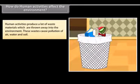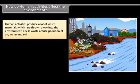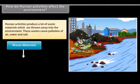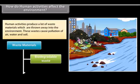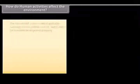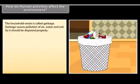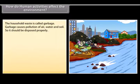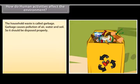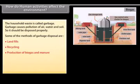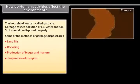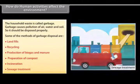How do human activities affect the environment? Human activities produce a lot of waste materials which are thrown into the environment. These wastes cause pollution of air, water and soil. The waste materials produced are of two main types: biodegradable waste and non-biodegradable waste. The household waste is called garbage. Garbage causes pollution of air, water and soil, so it should be disposed of properly. Some methods of garbage disposal are: landfills, recycling, production of biogas and manure, preparation of compost, incineration, and sewage treatment.